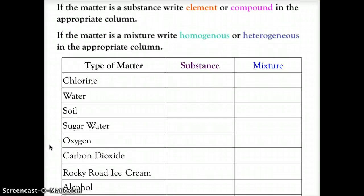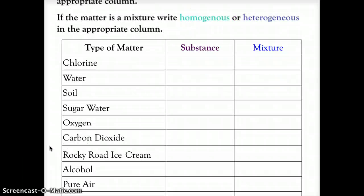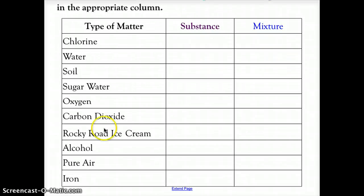So for each of the types of matter listed on the left, you're going to determine if it's a substance or a mixture. If it's a substance, you're going to put element or compound in the chart. If it's a mixture, you're going to write homogeneous or heterogeneous in the chart. Now you do have a PDF available for you and you can go ahead and print that out and fill it out if you want, or you can just do this mentally. So why don't you turn off the video now, fill in the data, and then come back and see how you did.